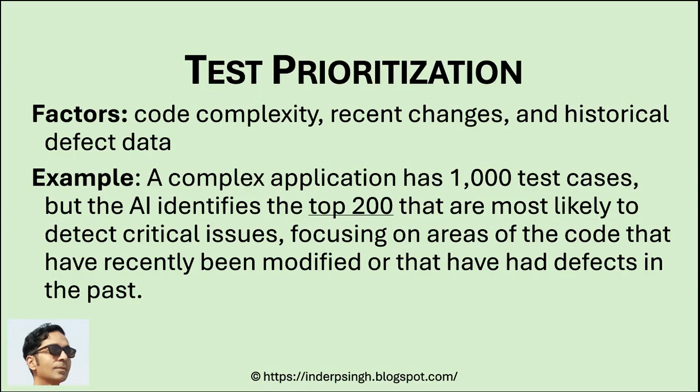AI can also optimize the testing process through test prioritization — selecting the most critical test cases to execute first. In a typical software project, it's not always feasible to run every single test case due to schedule constraints. AI can analyze factors such as code complexity, recent changes, and historical defect data to prioritize test cases most likely to uncover significant issues.